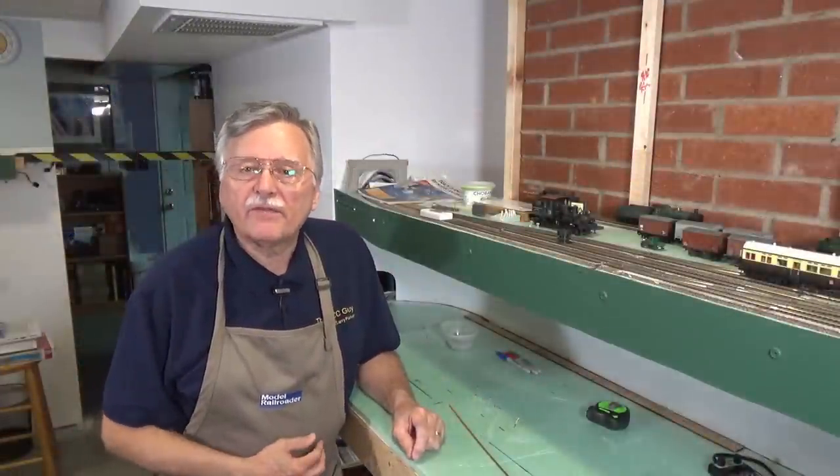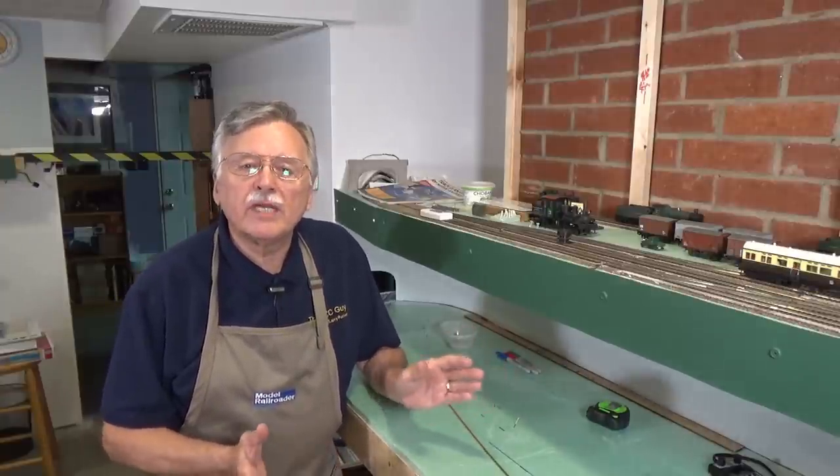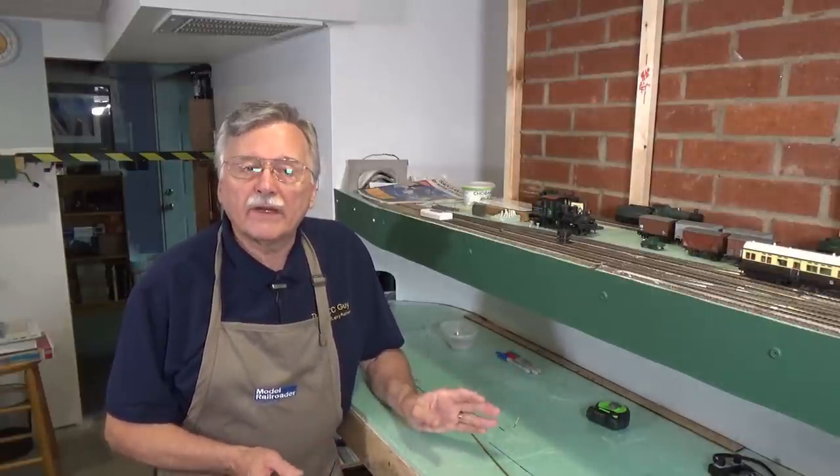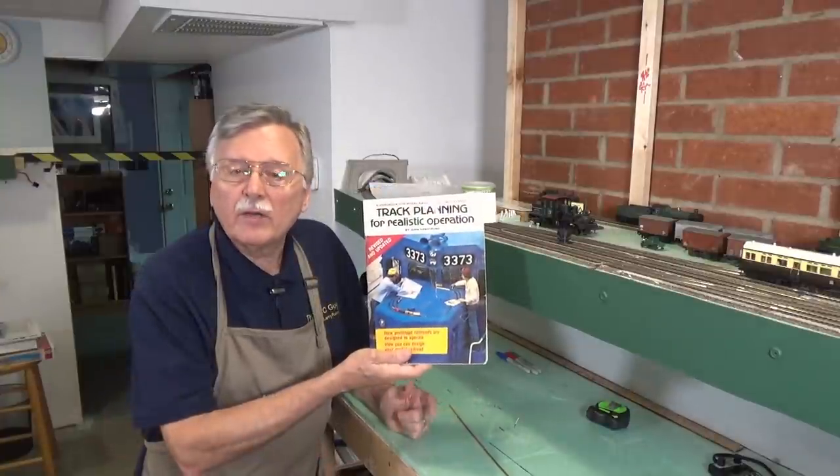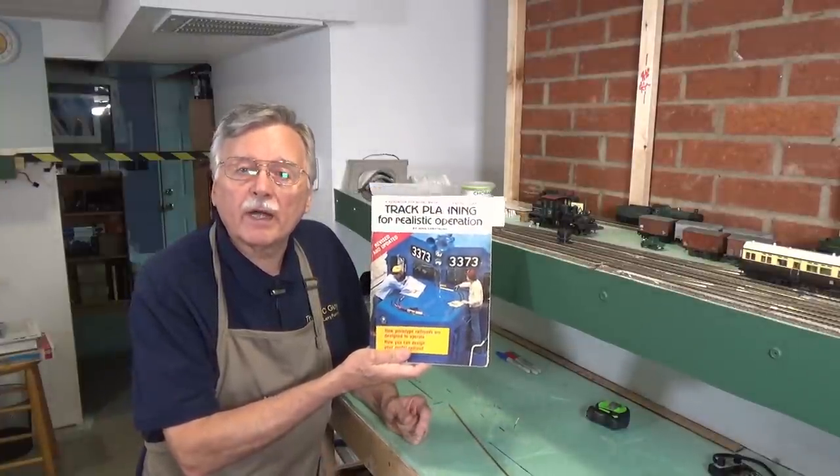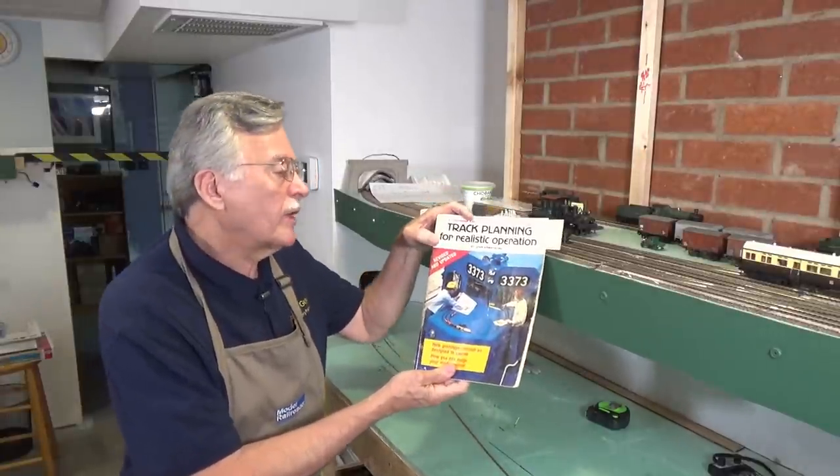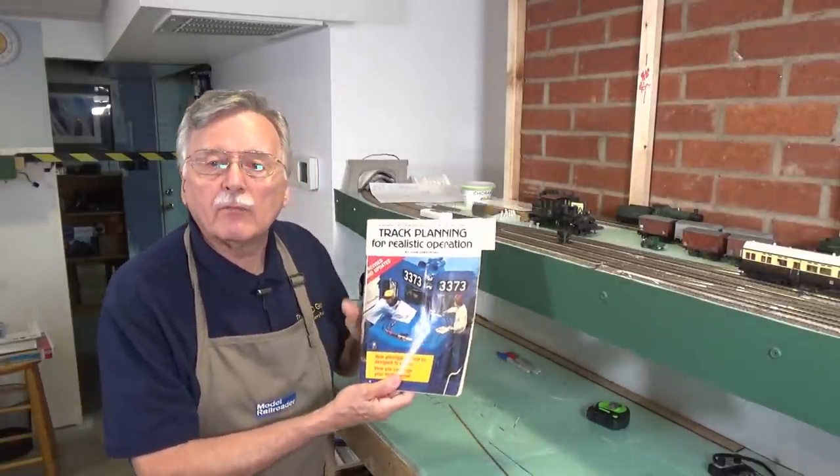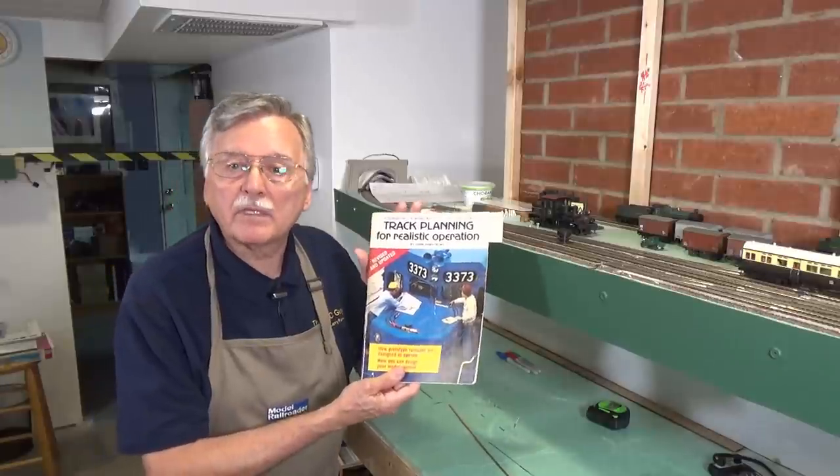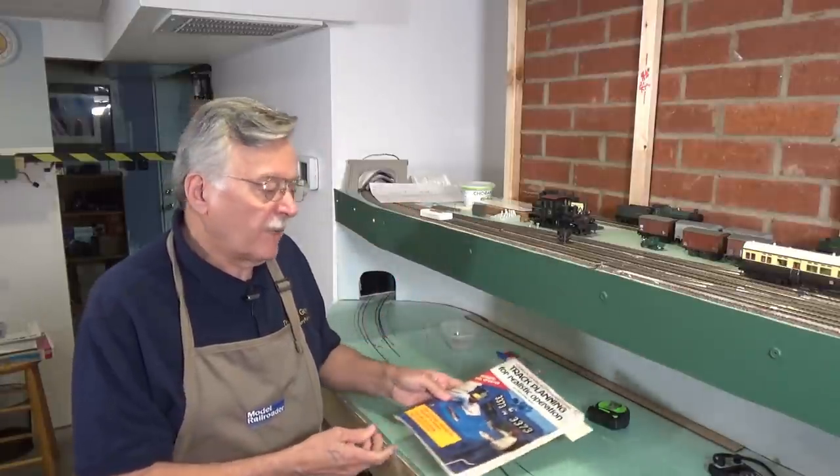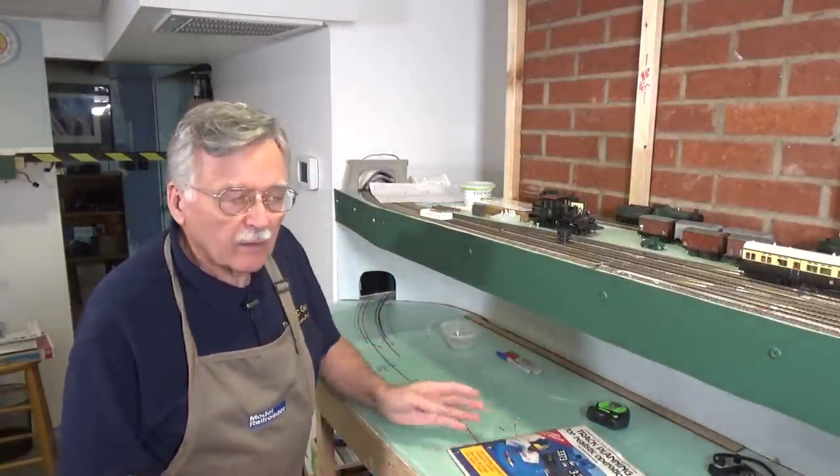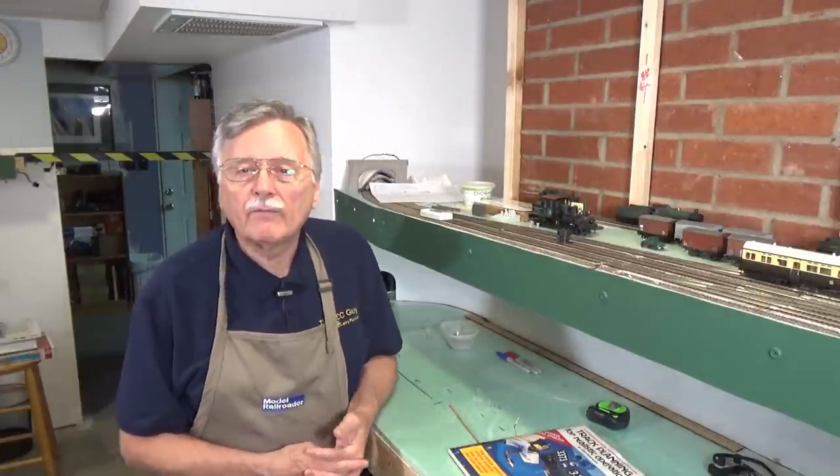Well, that's a wrap for today's video. I hope I gave you a good explanation of how to do these easement curves. They are fairly straightforward. And if you don't already have a copy, go ahead and pick up a copy of John Armstrong's book, Track Planning for Realistic Operations. You know, it's sort of like the Bible as far as track planning information goes. And I look at it all the time for my reference.